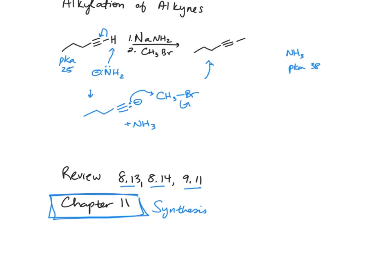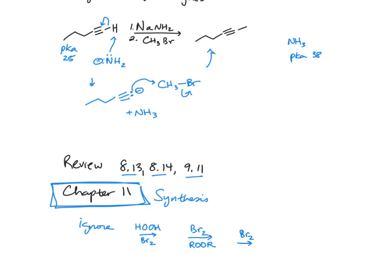Here you can ignore anything you see with peroxides and bromine. Usually the bromine is written on top. You can also ignore NBS and light. Other than these reactions that you need to ignore, chapter 11 is a great chapter for you to read to get all of your reactions together.